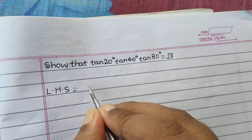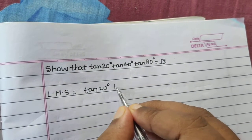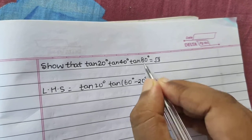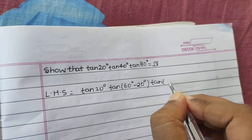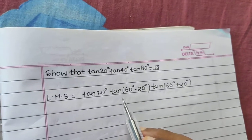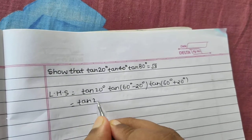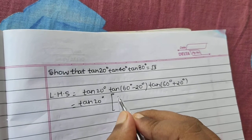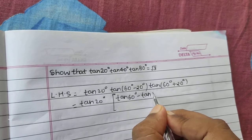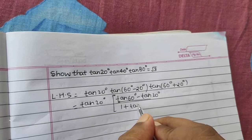I can write tan40° as tan(60° − 20°) and tan80° as tan(60° + 20°). So we have tan20° · tan(A−B) · tan(A+B), where A = 60° and B = 20°. Now tan(A−B) = (tanA − tanB) / (1 + tanA·tanB).